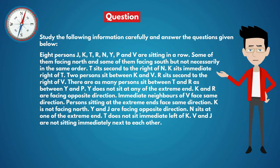Y and J are facing opposite direction. N sits at one of the extreme end. T does not sit immediate left of K. V and J are not sitting immediately next to each other.